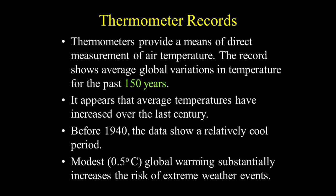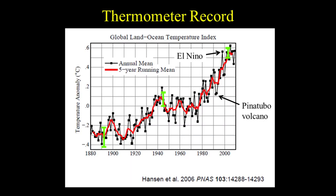Before 1940, the data show a relatively cool period. A modest 0.5 degrees Celsius global warming substantially increases the risk of extreme weather events. Here is the thermometer record of the last 130 years or so. Notice that global temperature variability can be due to natural processes internal to the climate system, such as El Niño.